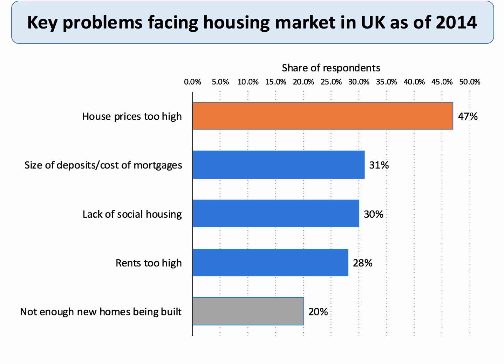When people are asked what are the key problems facing the housing market in the UK, typically they say that the biggest problem is affordability. 47% of people in this survey in 2014 replied that house prices were too high. Linked with that is the difficulty in saving enough money to raise a deposit on a mortgage and also the cost of meeting the mortgage. Other big issues cited in surveys included the lack of social housing and the fact that rents were too high, especially for people who can't afford to buy. And crucially, 20% of people say that not enough new homes are being built.